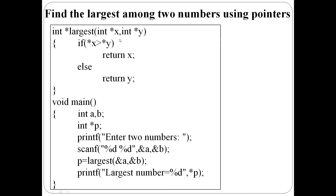Write a C program to find the largest among two numbers using pointers. Here a and b are the two variables, and p is an integer pointer. First of all, enter two numbers — read a and b. Then call the function largest, passing address of a and address of b. In the function definition, int star x and int star y receive the addresses. x receives the address of a, y receives the address of b. x and y are two integer pointers. So star x gives the value of a, star y gives the value of b. If star x is greater than star y, return the address of x; otherwise return the address of y.